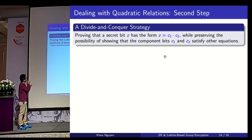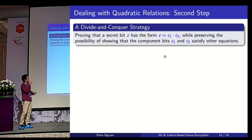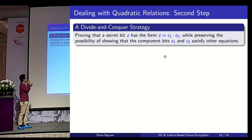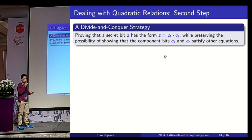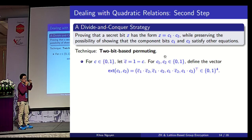Now we go to the second step, handling vector Z. We employ a divide-and-conquer strategy where we view the whole problem as a bunch of sub-problems. For each sub-problem, we aim to prove that a secret bit Z has the form Z equal to C1 times C2, while preserving the possibility of demonstrating that the component bits C1 and C2 satisfy other equations. To this end, we use permuting techniques based on two bits. For every bit C, we denote by C-bar the bit 1 minus C.